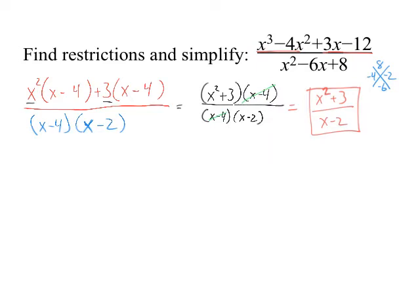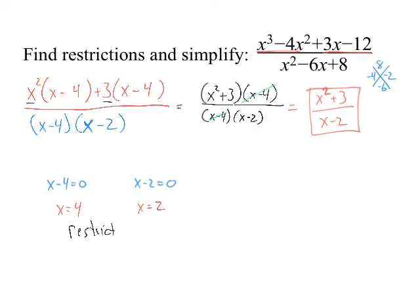Next, find the restrictions. Restrictions are when the denominator equals 0 — meaning when does x minus 4 equal 0 and when does x minus 2 equal 0. Those values are 4 and 2. A common mistake is to look only at the simplified denominator. The restrictions come from the original expression, so both x equals 4 and x equals 2 are restrictions — you cannot plug either into this function.